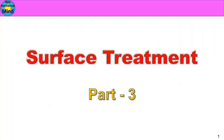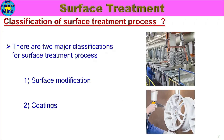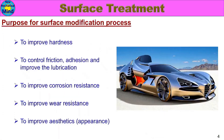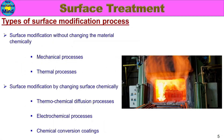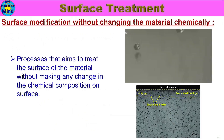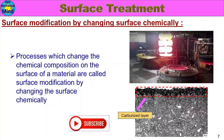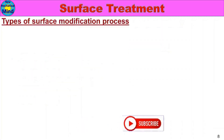Part 2 — you will see the link in the description. In the next part, we will cover: classification of surface treatment process, what is surface modification, purpose for surface modification process, types of surface modification process, surface modification without changing the material chemically, and surface modification by changing surface chemically. In this video, we will see the types of surface modification process.